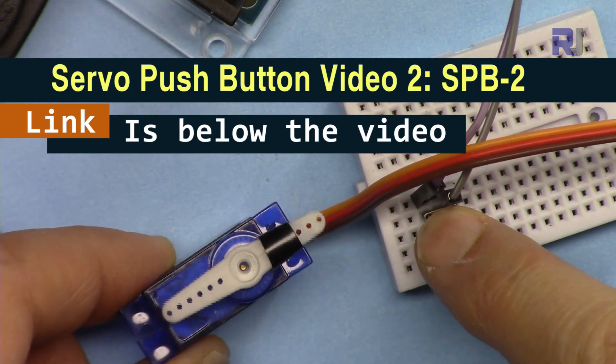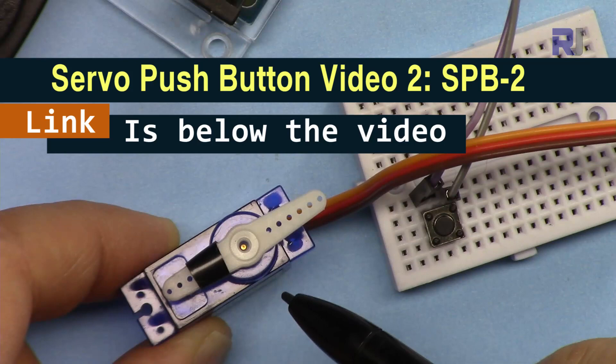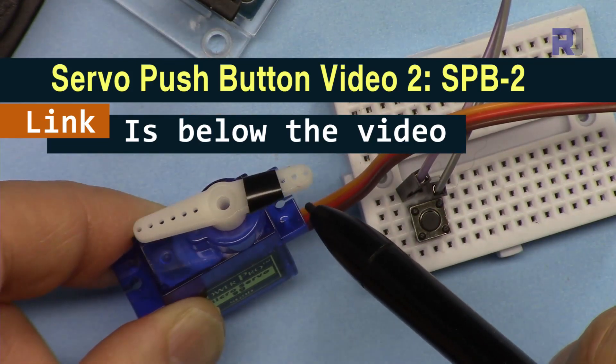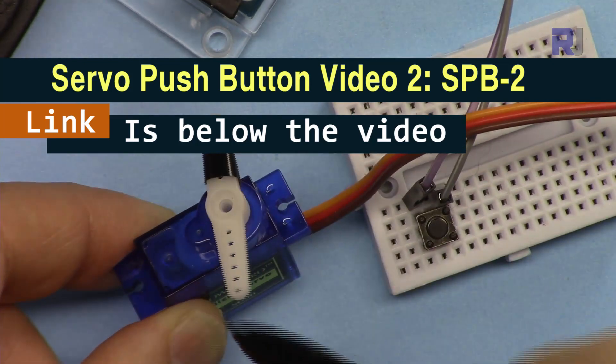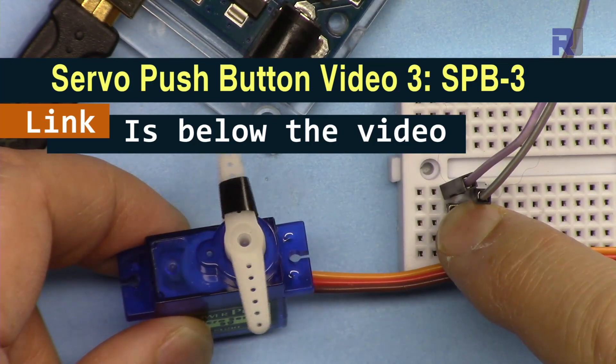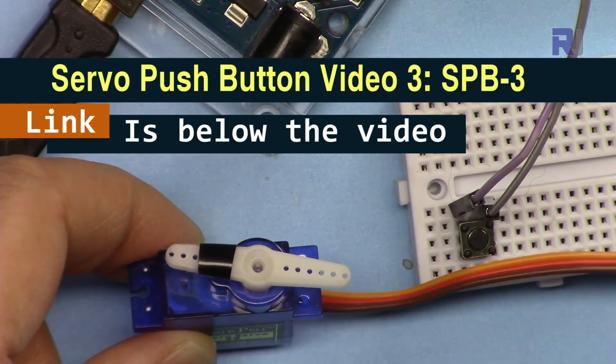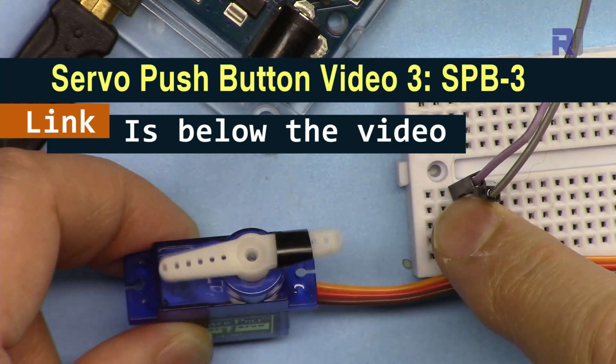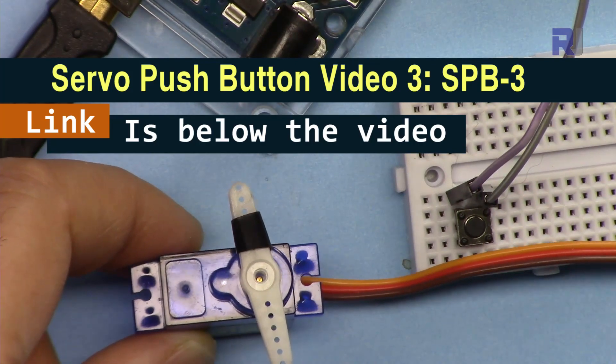As a project, you can control a servo motor using a push button. When you press the push button, the servo motor moves either from 0 to 180 and it stops, or moves from 180 to 0 and stops. Also as a project, you can control a servo motor using push button. When you press the push button, the servo motor starts from 0 to 180 and returns back as long as you keep the push button pressed. When you release the push button, the servo motor will stop.